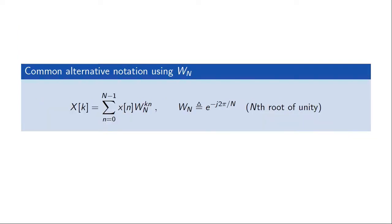The discrete Fourier transform can be written more compactly using the notation W_N, where W_N is simply the Nth root of unity. Instead of writing out the complex exponentials, we can write the transform in terms of powers of this W_N coefficient. This notation is often used in textbooks.